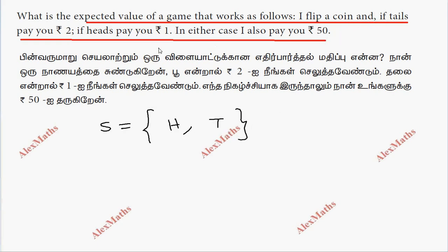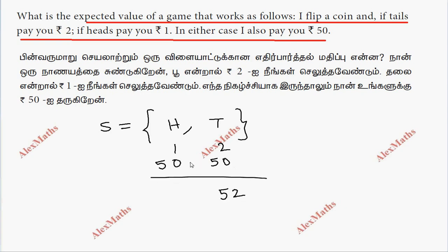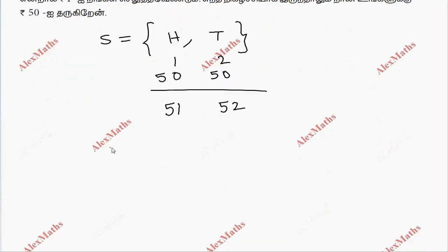If tails I pay you Rs. 2 and heads I pay you Rs. 1. So tails: Rs. 2 plus Rs. 50 = Rs. 52 total. Heads: Rs. 1 plus Rs. 50 = Rs. 51 total.